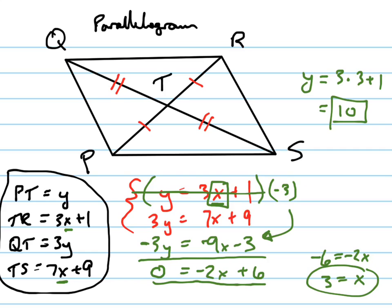So let's check our answer. If we plug in 10 for y, that gives you 30 here and 10 there. If we plug in 3 for x, that gives us 10 here and 30 here. It checks out.